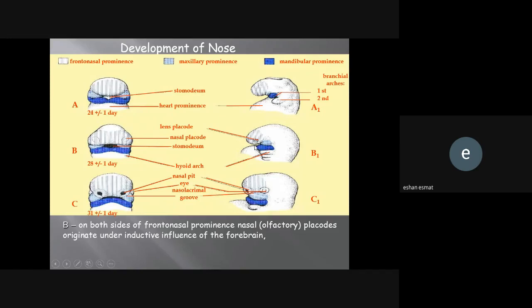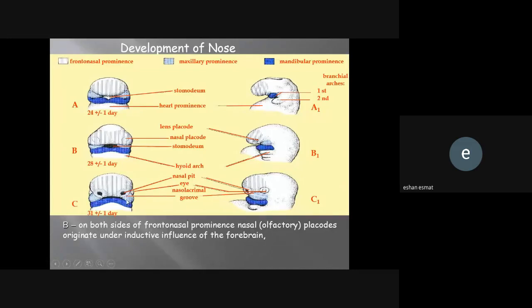Maxilla becomes more prominent, and on both sides of the frontal nasal prominence, nasal or olfactory placodes originate under inductive influence of the forebrain. You can see here, this is the eye on the lateral side, and here is the start of formation of the nasal, also called the nasal pit. You see, this is the eye on the lateral side, this is nasal. When you first look you might say this is the eye, but no, this is nasal. It's separated, and by the time they will become one part. This is the nasolacrimal groove, which will form the nasolacrimal duct. This is the maxilla and this is the mandible.